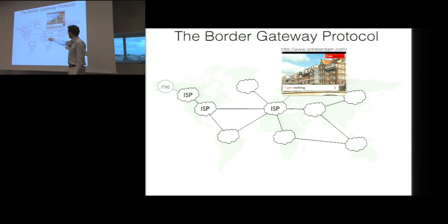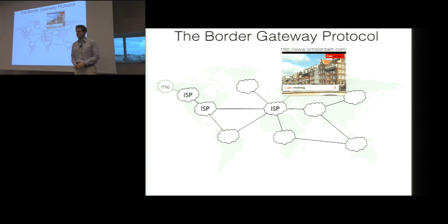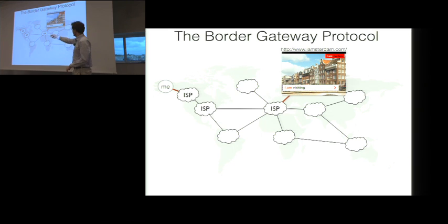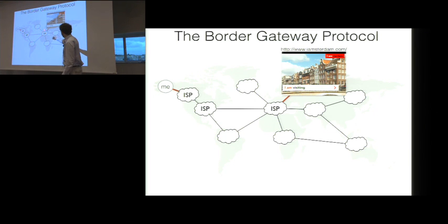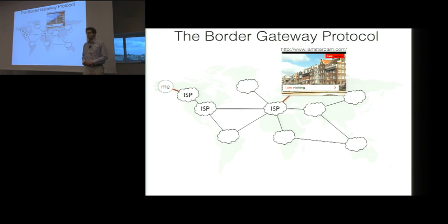For example, me here in this bubble over here, I'm connected to an ISP in Seattle, like Comcast. But there are other ISPs, like universities or corporations. Now, talking to my own ISP and forwarding packets within the ISP is fairly simple, because the ISP has control over all its hardware and all its routers. What's more complicated is for these ISPs to talk with one another. And this is what the border gateway protocol is for.